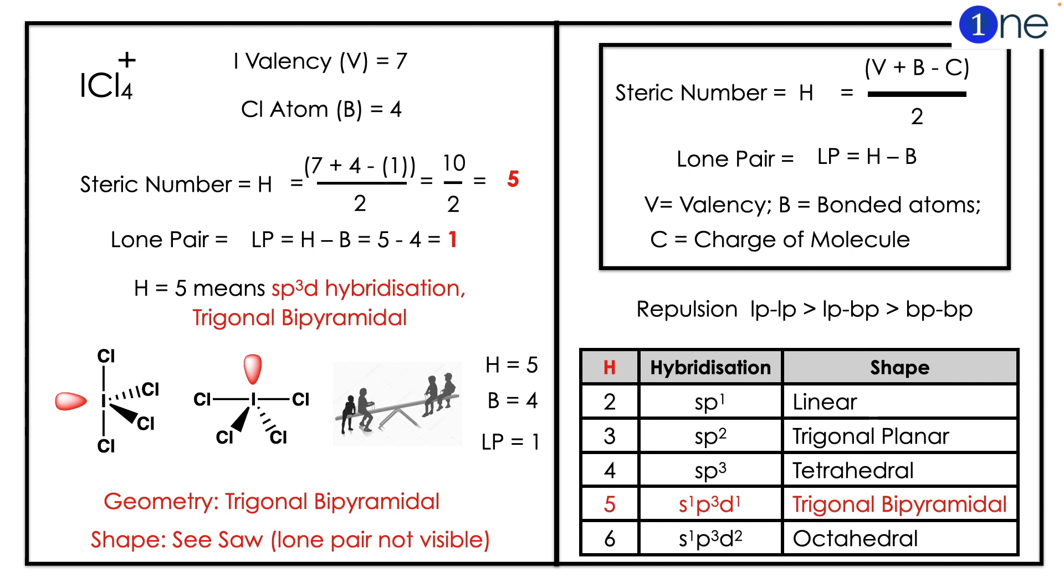To find the hybridization, you should know the steric number. Steric number is H = (V + B - C) / 2. If you substitute it, V equals 7, B equals 4, so steric number will be 5.